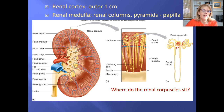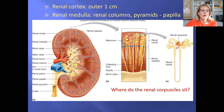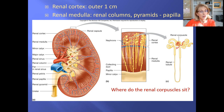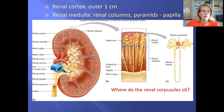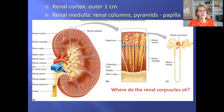Any urine found in a minor calyx would have come from one renal pyramid — all the collecting ducts going through that renal pyramid drop their urine there. From the minor calyx, urine moves into a major calyx, which collects urine from multiple minor calyces. Then there's the large open area called the renal pelvis, where a drop of urine could have come from anywhere in the kidney.